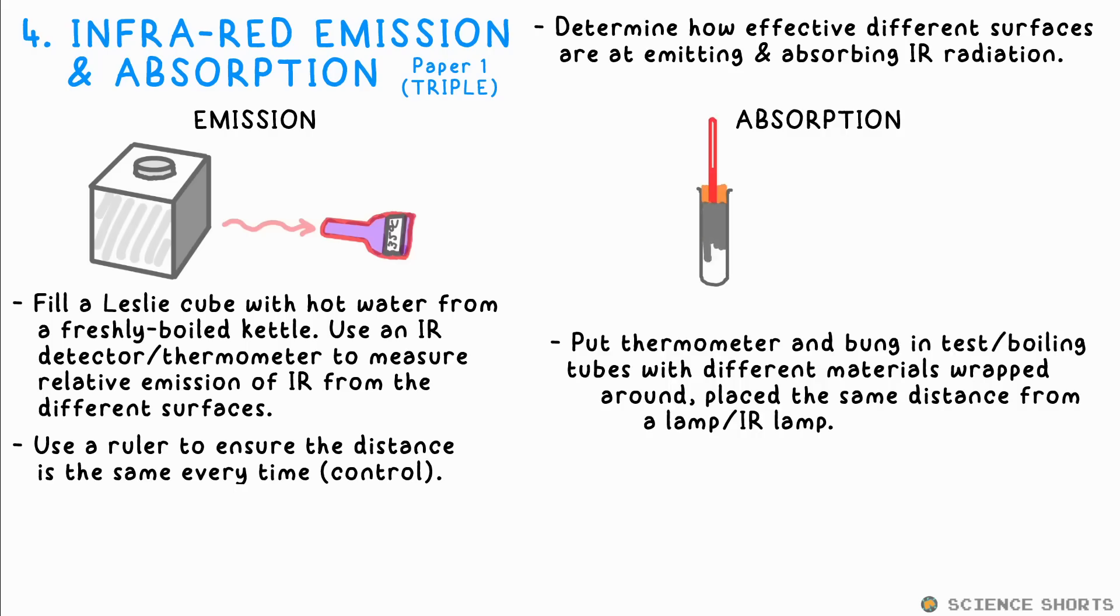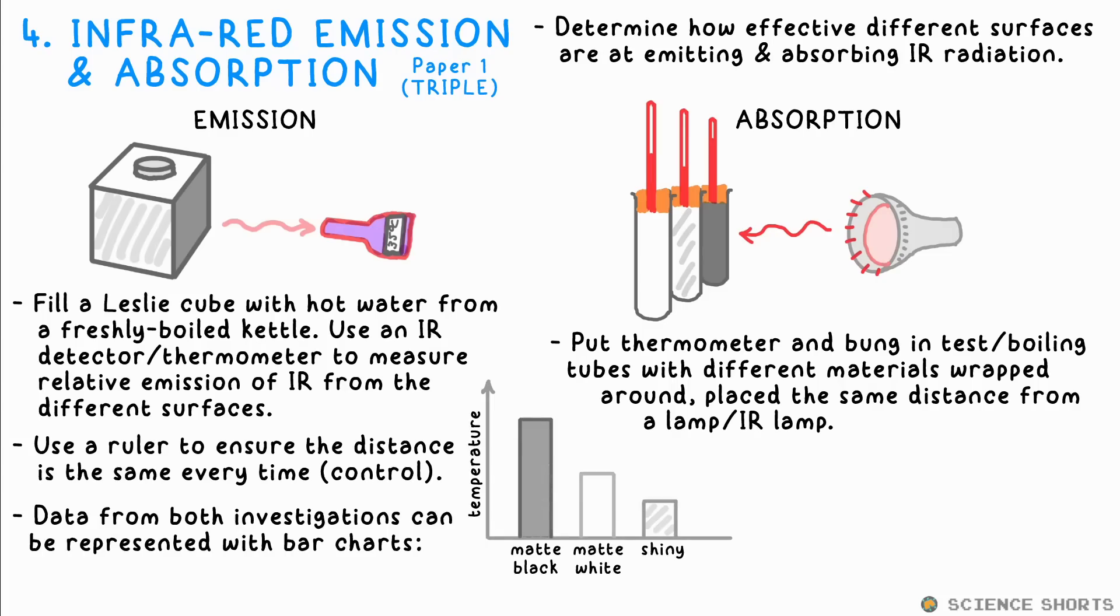Another prac we can do is just have boiling tubes wrapped in different materials with a thermometer through a bung in the top of each, have the sun or a lamp shine on them, and record their temperatures after a set time. You'll find that matte black is not only the best emitter of infrared, it's also the best absorber. While shiny surfaces are the worst absorbers, which makes sense as they reflect light well, so it's also true for infrared.